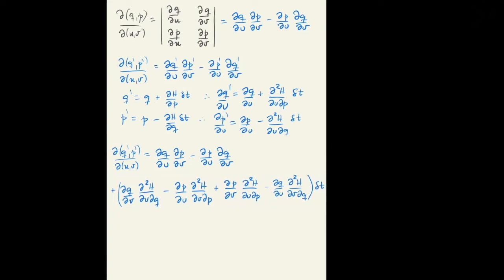The derivative of the area then in time: we take the limit of A prime minus A over delta T in the limit that delta T goes to zero. So given the definition of the area, that's simply the difference of the Jacobians.